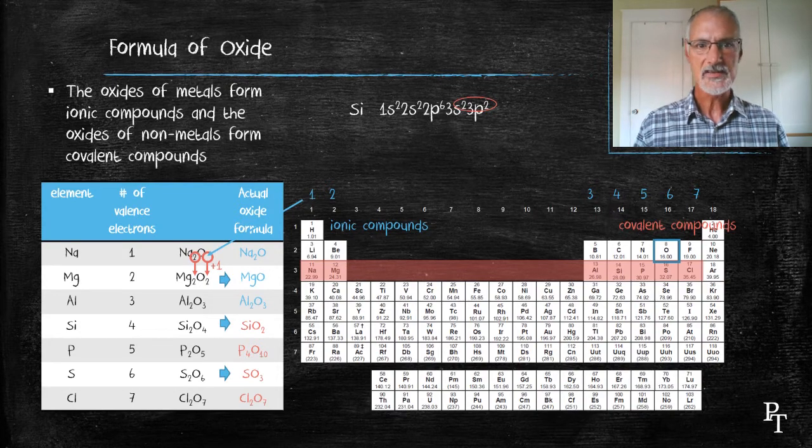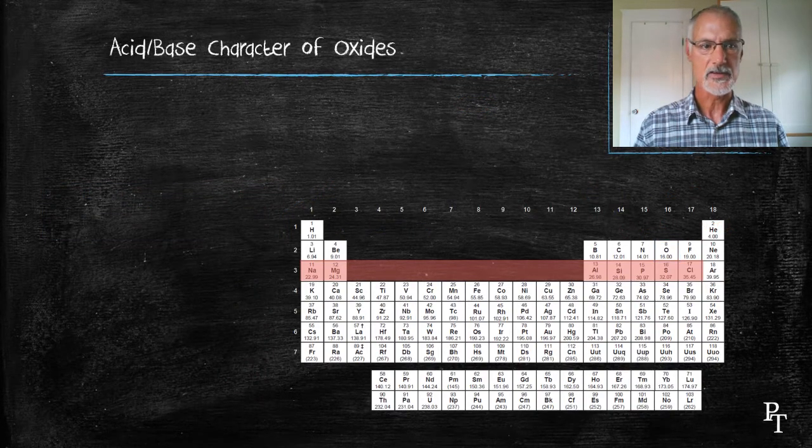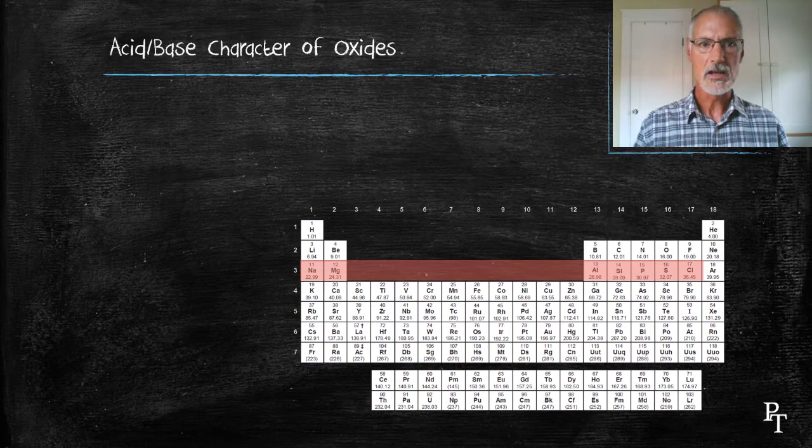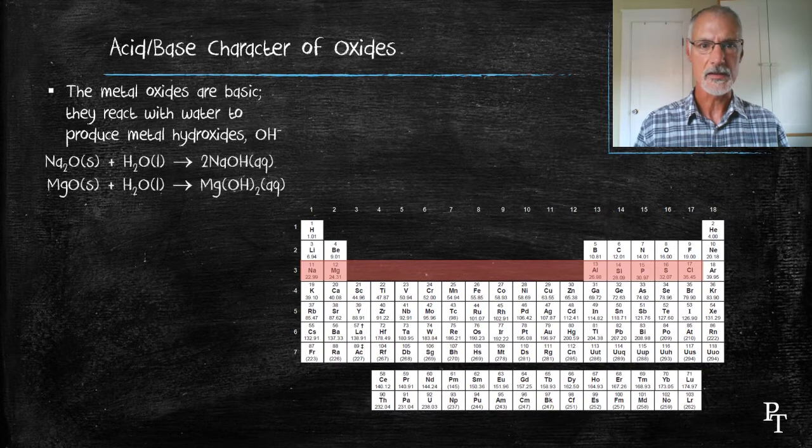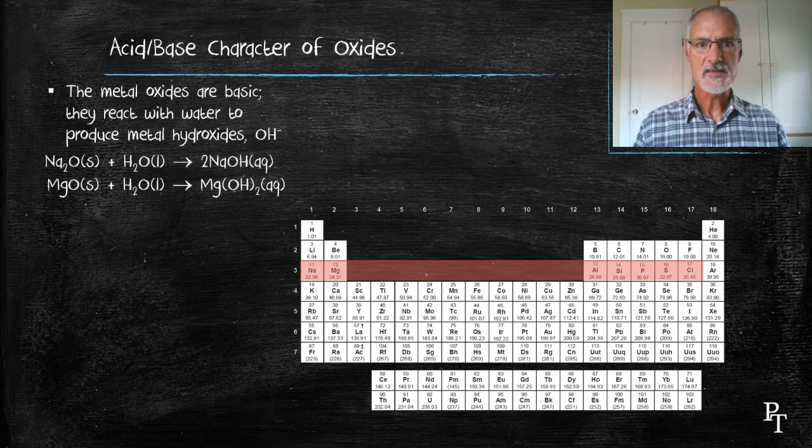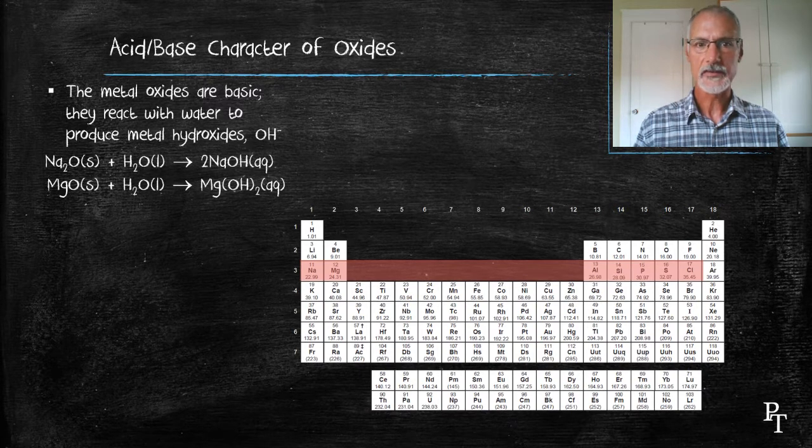Let's take a look at the acid-base nature of these oxides when they're mixed with water. Metal oxides, when combined with water, form basic compounds. And here's the particular balanced equations that show that. The reaction of these metal oxides with water results in the production of the hydroxide ion, which makes the material basic.